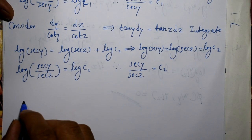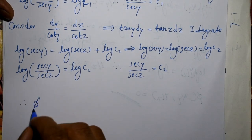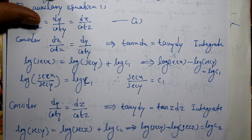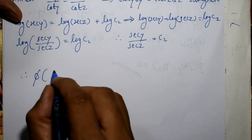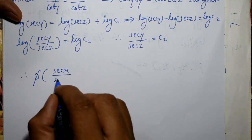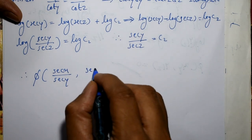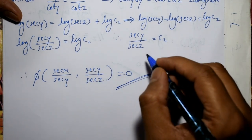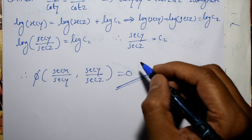Now the general solution of the PDE. Therefore, φ(c1, c2) = 0, where c1 = sec(x)/sec(y) and c2 = sec(y)/sec(z). This is the required general solution of the PDE.